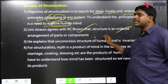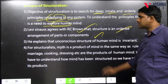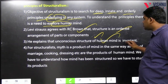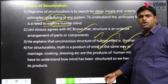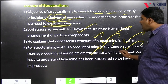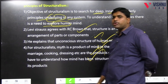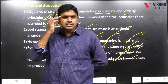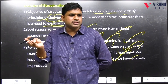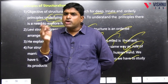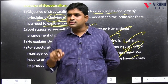R.C. Brown's definition — 'structure is an ordered arrangement of parts or components' — is also supported by Lévi-Strauss. Unconscious structure of human mind is invariant. Myth is a product of mind, in the same way as rules of marriage, cooking, or dressing are products of human mind. We have to study its products to understand how the mind is structured — products are myths, beliefs, customs. Culture can be understood as a whole, not as a piecemeal. Lévi-Strauss's views on language and culture: language and culture are homologous and analogous — language is part of culture.